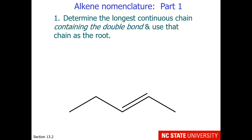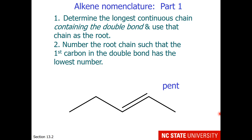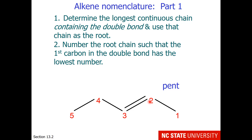The rules are: determine the longest continuous chain containing the double bond and use that chain as the root. This chain has 5 carbons, so our root will be 'pent.' Now number the root chain such that the first carbon in the double bond has the lowest number. Starting from the right side gives the double bond starting at carbon 2. So the name is the number where the double bond starts, the root, and the ending '-ene' — giving us 2-pentene.